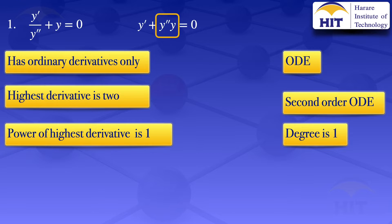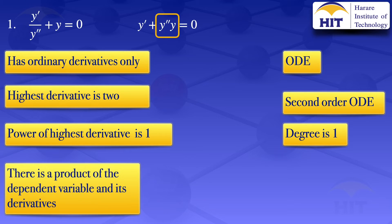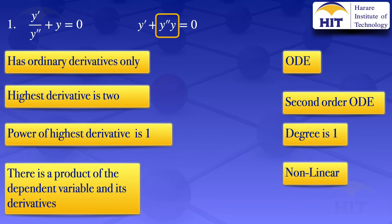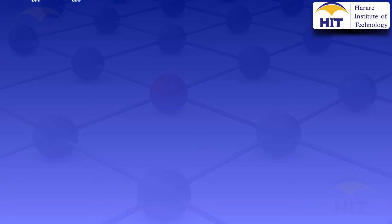Looking at y prime prime multiplied by y, we have the dependent variable multiplying the derivative of the dependent variable. Therefore by definition that differential equation is non-linear. So what we have is an ODE, it is a second order of degree one, and it is non-linear.